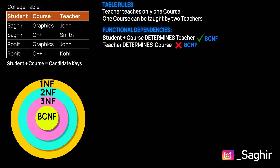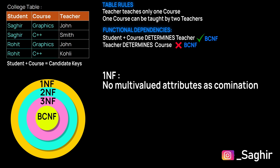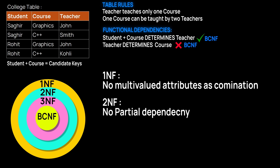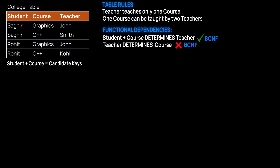We also need to verify if the table satisfies first, second, and third normal form. The table does not have multi-valued attributes, so it satisfies first normal form. It also does not have partial dependency — the non-prime key depends on both course and student, not just part of the candidate key. For third normal form, transitive dependency means a non-prime attribute determines another non-prime attribute; since there is only one non-prime attribute, there is no transitive dependency either.